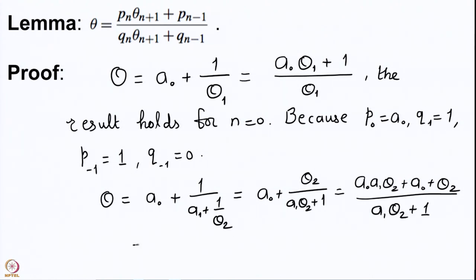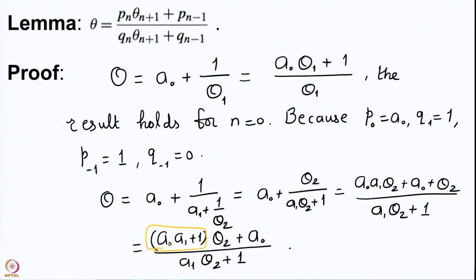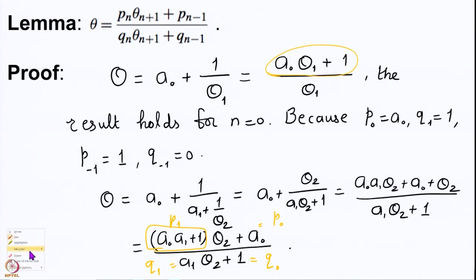For n = 1, we have θ = (a₀a₁ + 1)θ₂ + a₀ all over (a₁θ₂ + 1). Here a₀a₁ + 1 is our P₁, a₁ is our Q₁, a₀ is our P₀, and 1 is our Q₀. So the result holds for n = 1, and we will prove it for higher cases using induction.